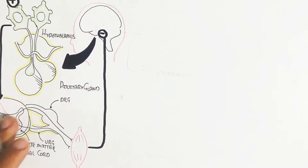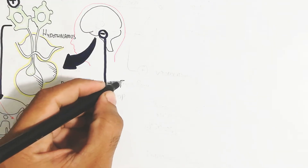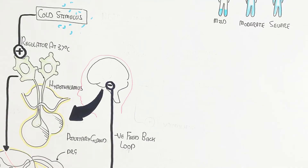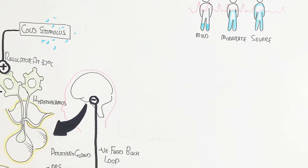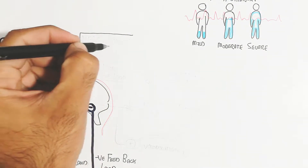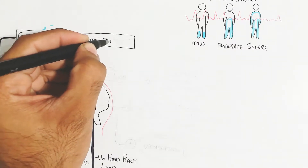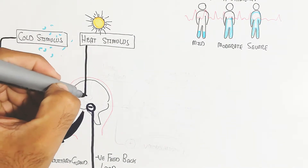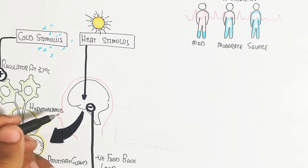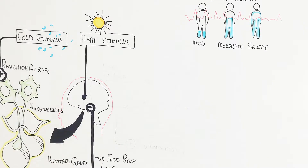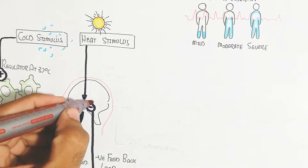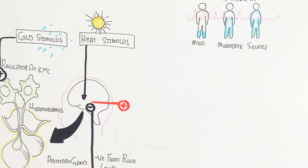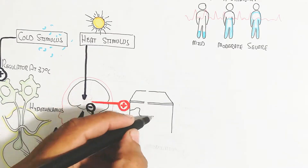After body temperature reaches 38 degrees Celsius, a negative feedback loop signals the hypothalamus to inhibit further shivering and stimulation. In the case of a heat stimulus — when exposed to sun or warm temperatures — the hot temperature triggers the hypothalamus, which works to decrease body temperature from 38 degrees back to 37 degrees Celsius.